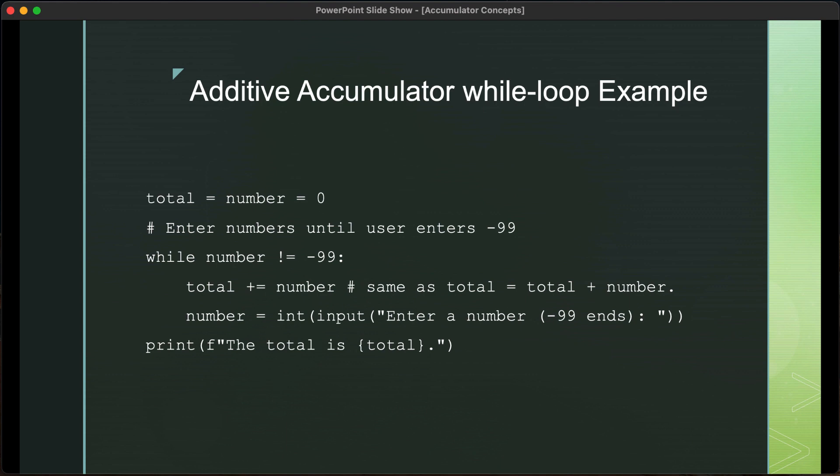The first thing in the loop will be to aggregate. The first time through, since number is 0, total will still hold the value of 0. But then when we get to the next line and we ask the user to enter a number, note we tell the user that negative 99 ends the program.